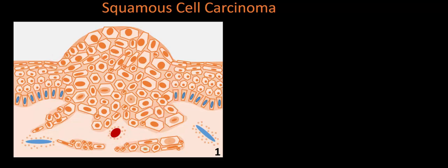Before describing the cancer, let's look at a normal span of epidermis on the left, because understanding normal helps us appreciate what's abnormal. Notice the orderly progression from the basal cell layer at the bottom all the way up to the stratum corneum at the top — in direct contrast to the center of the image. There are four features that distinguish this lesion as an invasive squamous cell carcinoma.